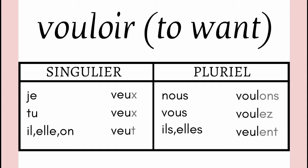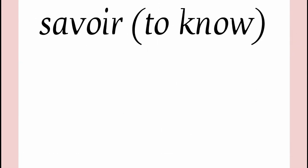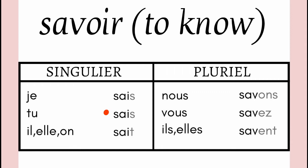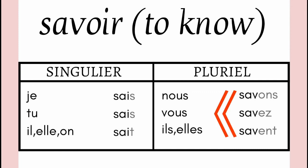The next verb is SAVOIR. SAVOIR means to know. And how this verb is conjugated: je sais, tu sais, il sait, elle sait, nous savons, vous savez, ils savent, elles savent. The endings are the same: S, S, T, ONS, EZ, ENT. And the radical with je, tu, il, elle is S-A-I. With nous, vous and ils, elles, all the plural radicals are the same — S-A-V.